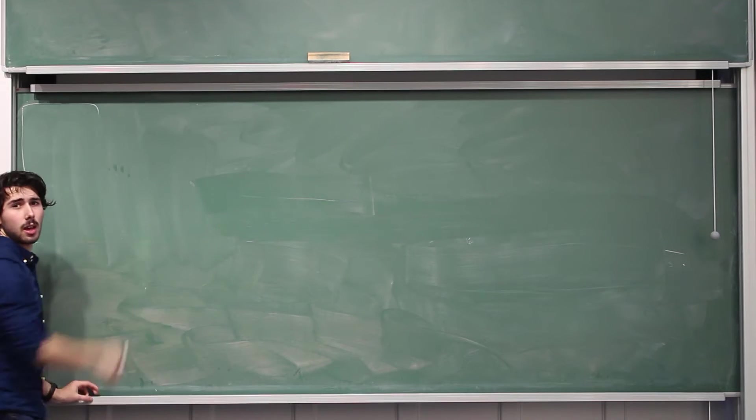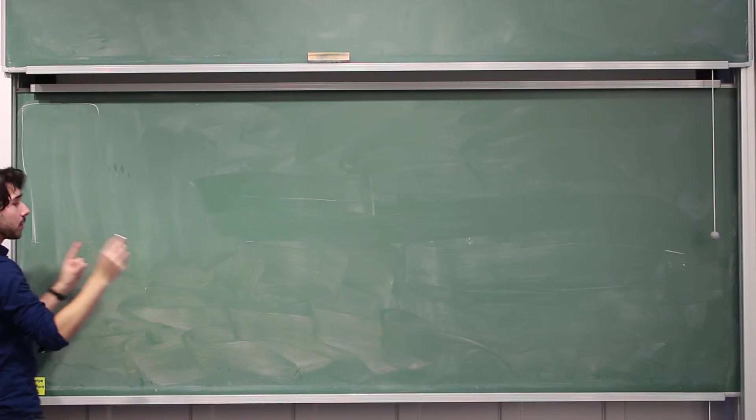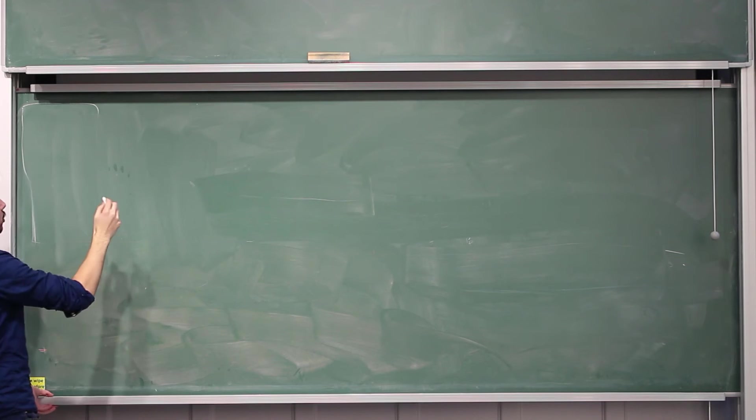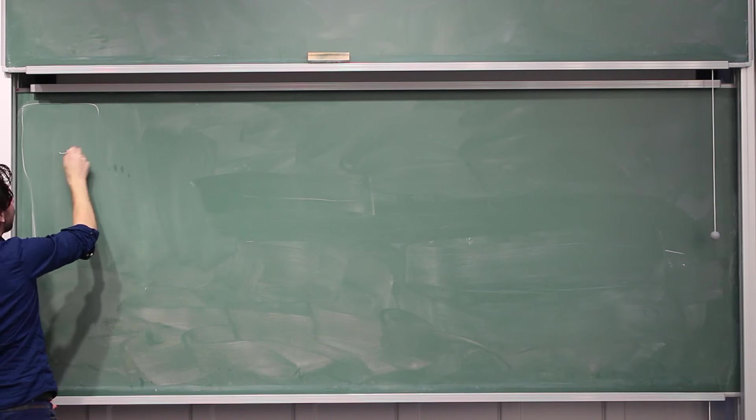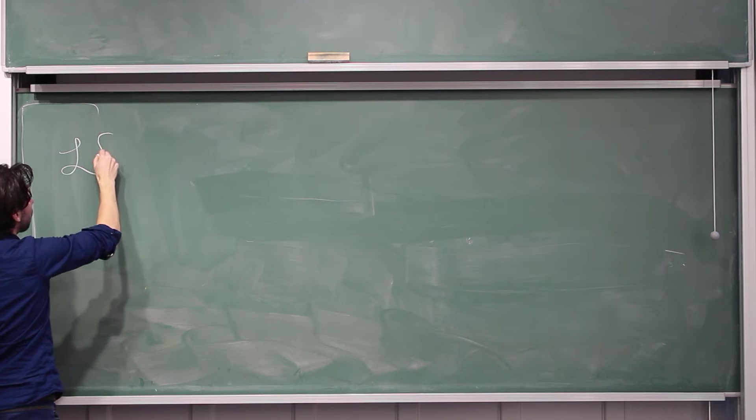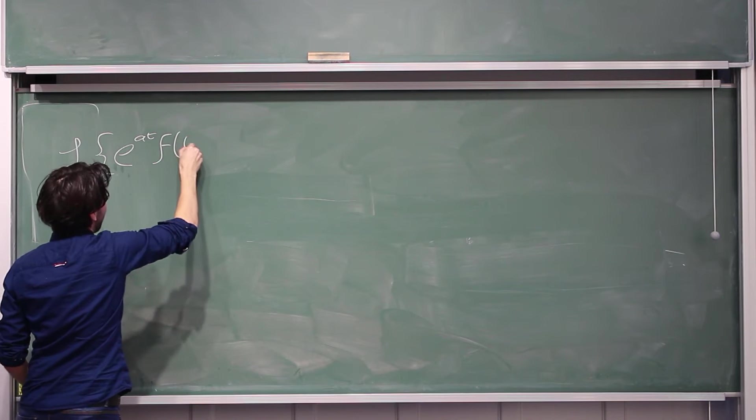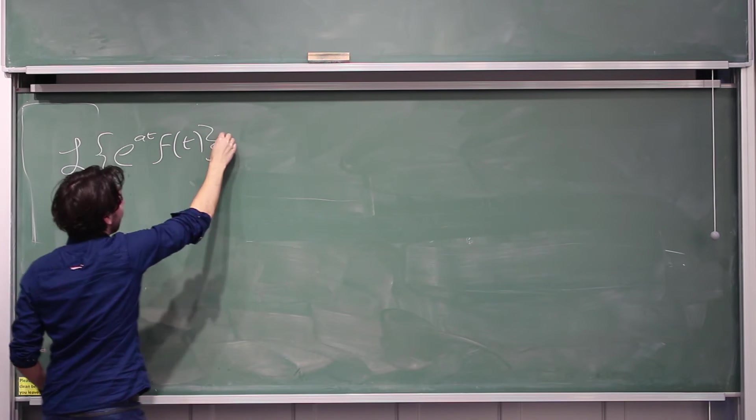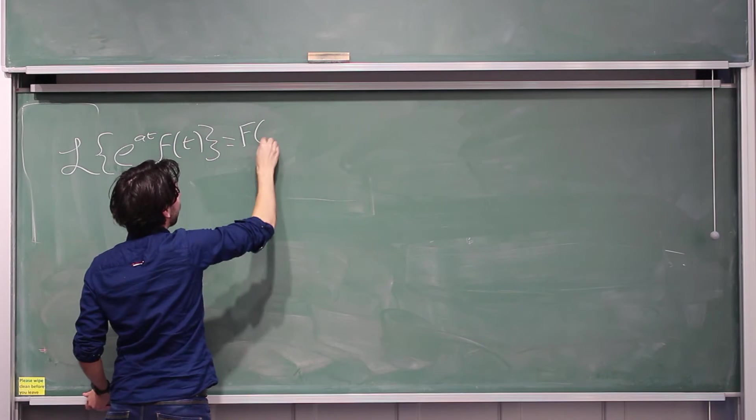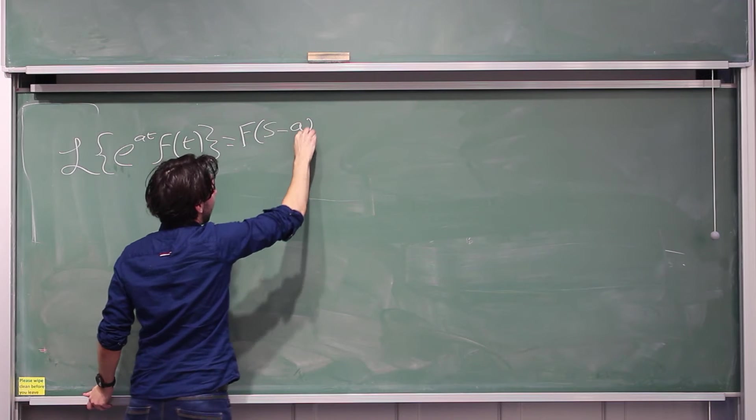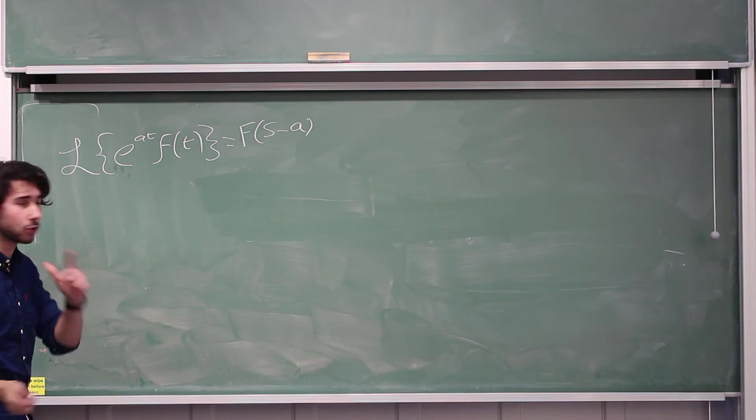So we're going to get rid of that for a second and we're going to go straight into the proof. So once again I'm just going to write it down, the first shifting theorem says that the Laplace transform of e to the at times f of t is capital F of just s minus a. That's what it says, let's prove it now, let's do it, it's very easy.